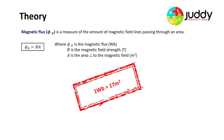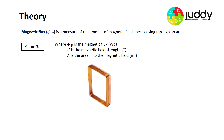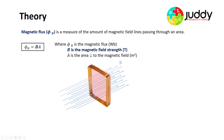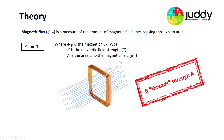One weber is equal to one tesla·meter squared. Here we have a copper coil with an area shaded in red, and magnetic field lines represented by B coming in perpendicular to that area. Visually, you can think of the magnetic field B as threading through the area A — it's a nice way of understanding magnetic flux as field lines threading through the area of a coil.